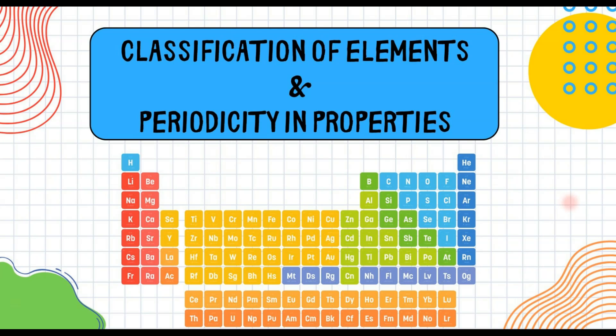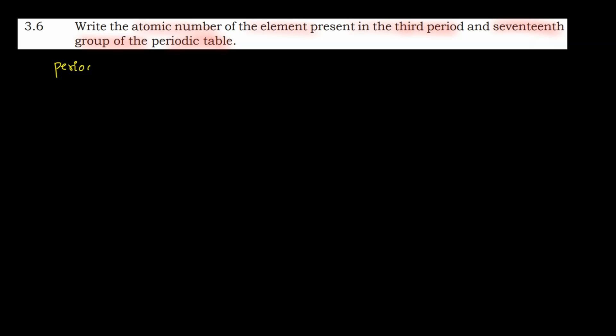Hello everyone. We are discussing the back exercise questions of the chapter 'Classification of Elements and Periodicity in Properties.' Today we will discuss question number 6. The question is: write the atomic number of the element present in the third period and 17th group of the periodic table. So you have to find the atomic number of the element in period 3 and group 17.